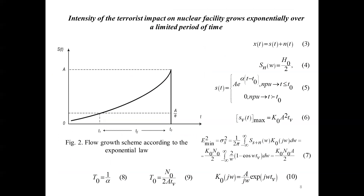Let's consider the developed mathematical apparatus for different intensities of terrorist influence on a nuclear facility. Firstly, let's consider the situation when the intensity of terrorist influence on the nuclear facility is growing according to an exponential law during a limited period of time. In this case, the input of the abstract quadripole is influenced by the additive information flow consisting of useful information and information noise. It is necessary to find the complex frequency characteristics of the abstract quadripole which minimizes the mean square of the error when the intensity of the input information flow increases according to the exponential law during a limited period of time.